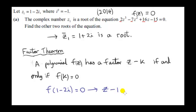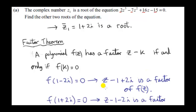So we have to subtract 1 minus 2i, which gives us minus 1 plus 2i — so z minus 1 plus 2i — and this is a factor of f of z. Now we have a second root of our cubic equation: that's 1 plus 2i. Using the factor theorem again, if this is our k, then z minus k is a factor: z minus (1 plus 2i) equals z minus 1 minus 2i. So that's the second factor of f of z.